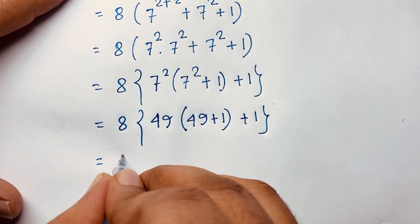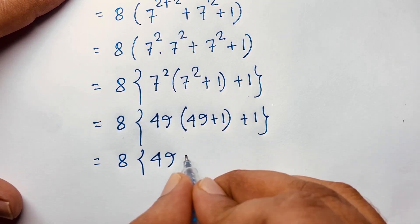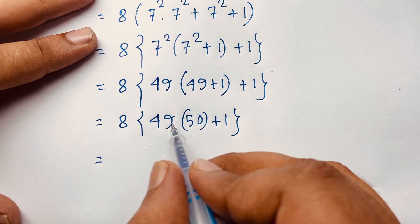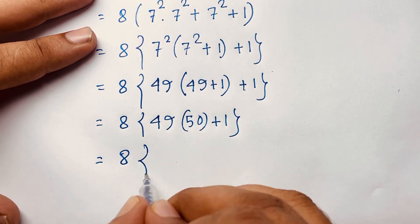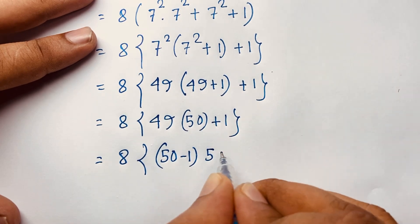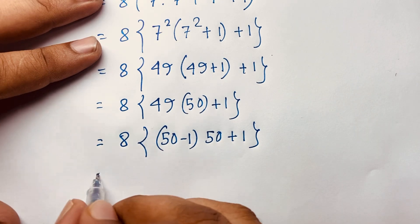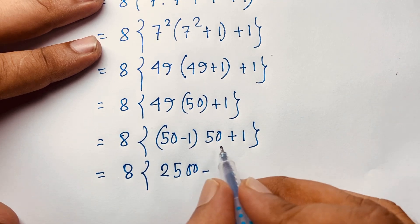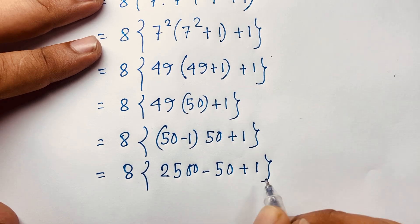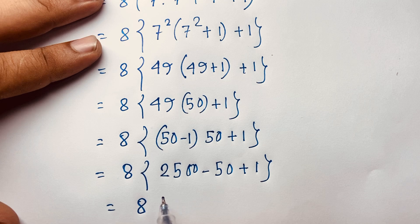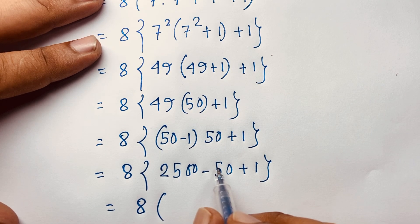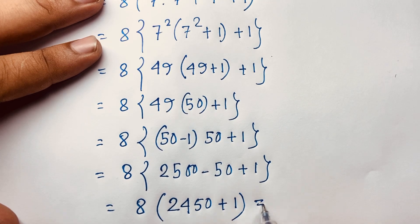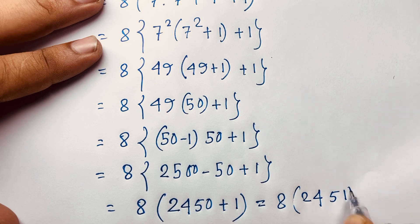At this moment: 8 times 49 times 51. I can rewrite 50 minus 1 times 50 plus 1 — so 8 times (50 minus 1)(50 plus 1). That gives 8 times (50 times 50 minus 1 times 1), which is 8 times (2500 minus 1), so 8 times 2499. Then 8 times 2450 plus 1 gives 8 times 2451.